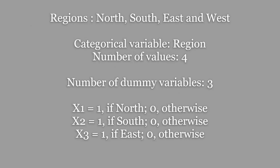So for the categorical variable region, since the number of values is 4—north, south, east and west—we will include three dummy variables x1, x2 and x3. x1 is coded as 1 if the region is north and 0 if otherwise. x2 is 1 if the region is south, 0 if otherwise, and x3 is 1 if the region is east and 0 if otherwise.